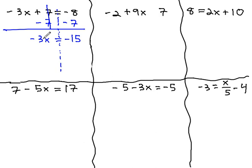Finally, to get the x alone, because it's multiplied by negative 3, we're going to have to divide by negative 3 on both sides. This gives us our final answer, x is equal to 5.